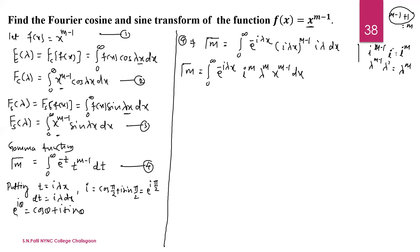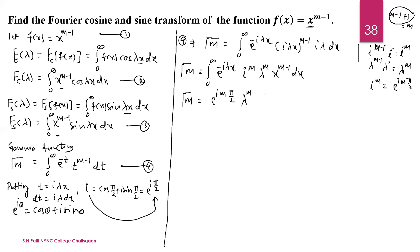Using the Euler function, e raised to i theta equals cos theta plus i sin theta. Since i equals e to the power i pi by 2, raising both sides to power m gives i to the power m equals e to the power i m pi by 2. So gamma of m equals e to the power i m pi by 2 times lambda to the power m times the integral from 0 to infinity of e to the power minus i lambda x times x to the power m minus 1 dx.